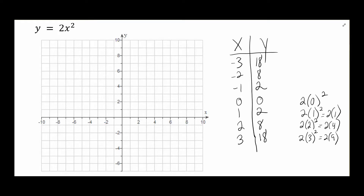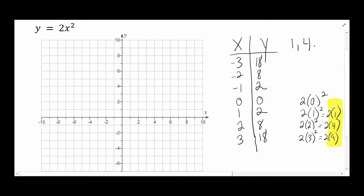Notice what happened in the highlighted area: the numbers 1, 4, 9 appeared — of course, it's 1 squared, 2 squared, 3 squared, the same 1-4-9 rule we've used before. But then I had to multiply by the coefficient of 2. That's really what's going on. Instead of going through all these steps, we just take our normal 1-4-9 rule and multiply those values by the coefficient — in this case by 2 — giving a 2-8-18 rule.